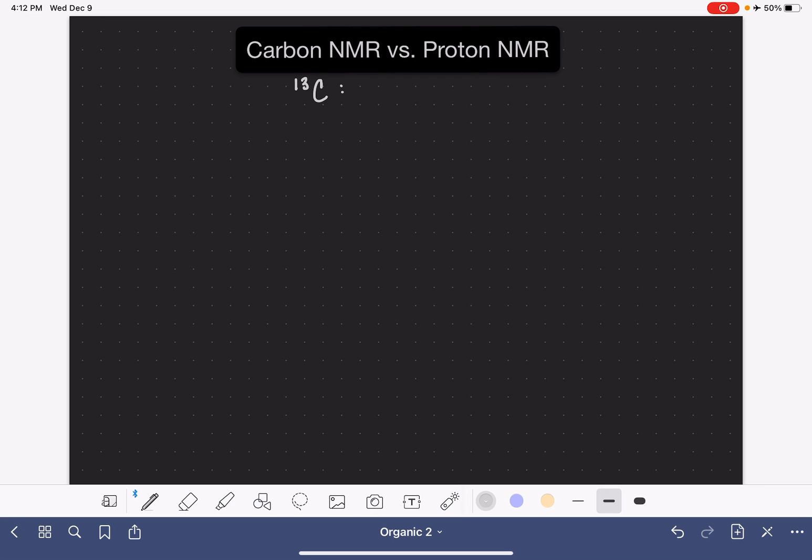Unfortunately, carbon-13 only accounts for about 1% of all carbon atoms in the universe. This creates complications when obtaining and analyzing a carbon NMR spectrum. Because only 1% of all carbon atoms are carbon-13, it's pretty unlikely that we will have two carbon-13 atoms in the same molecule.